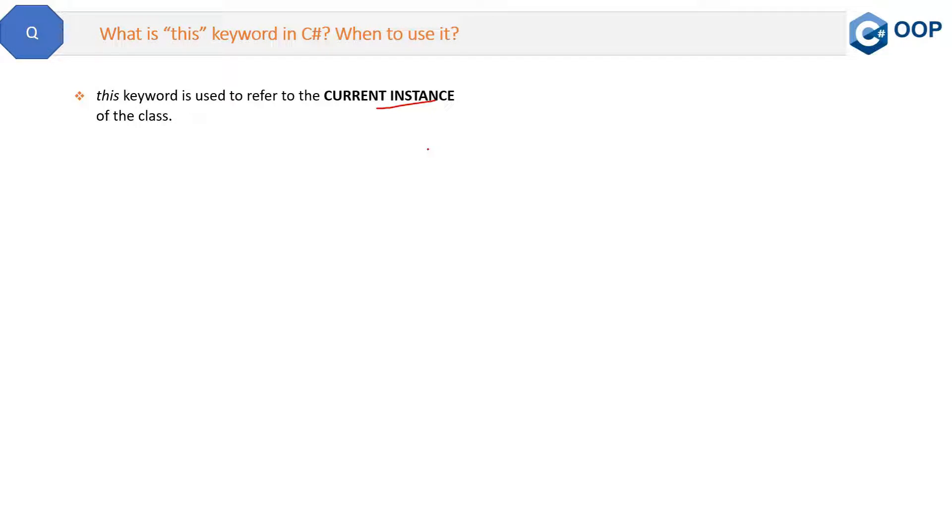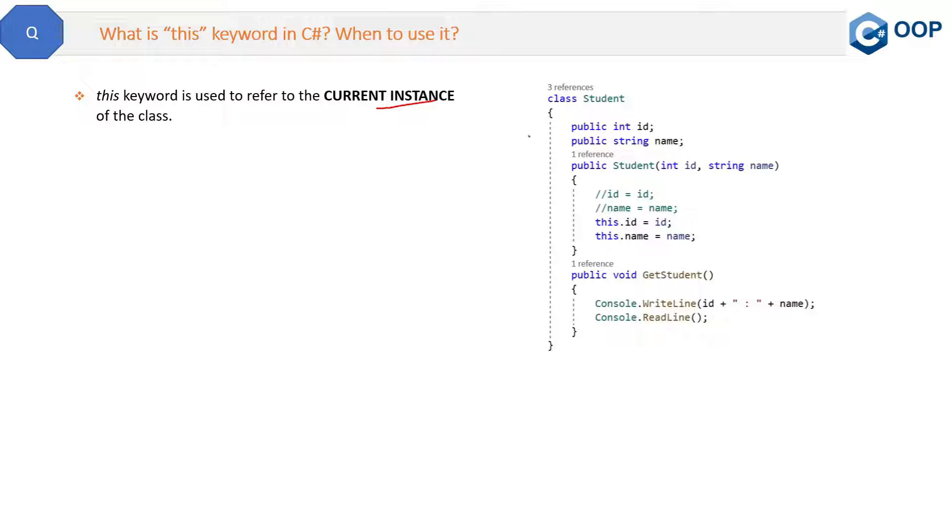Now what does it mean? Let me show you the code. Suppose you have a Student class like this. This class has two fields: id and name. This class also has a parameterized constructor.